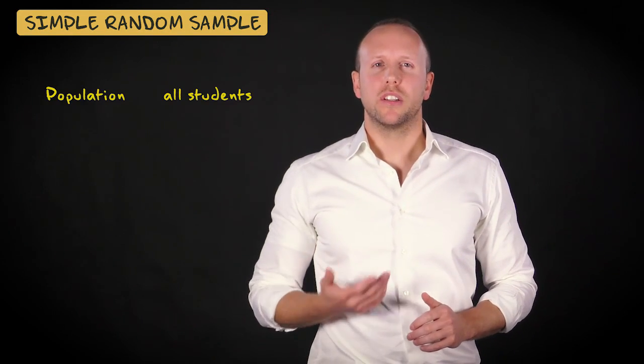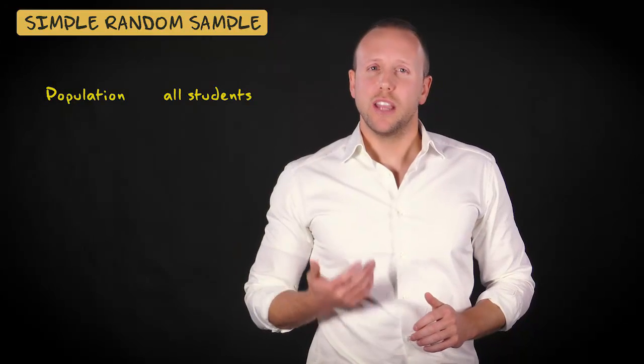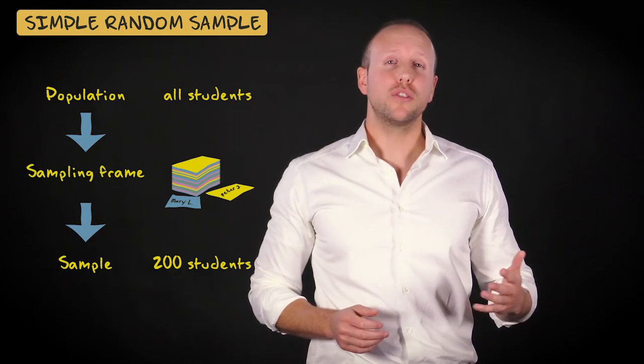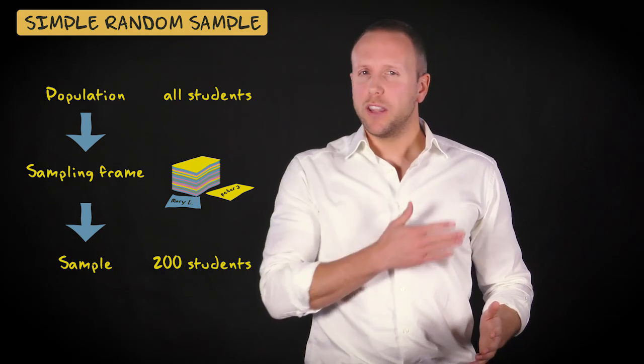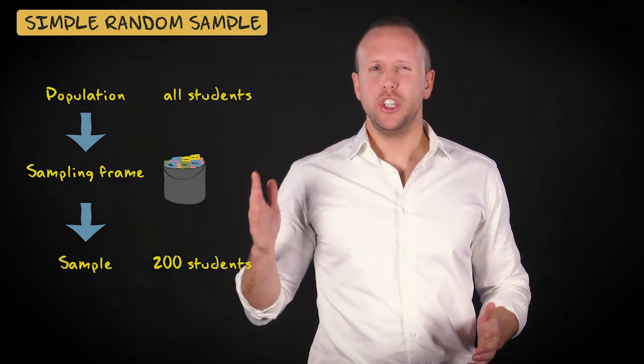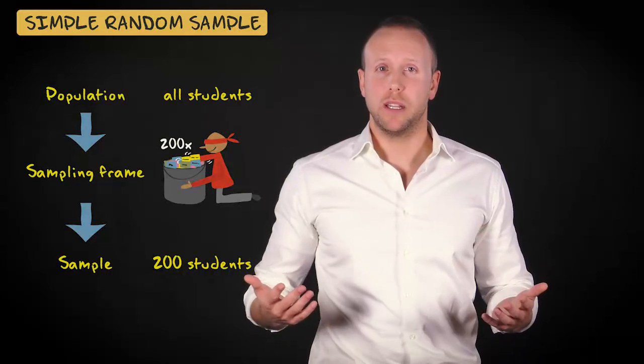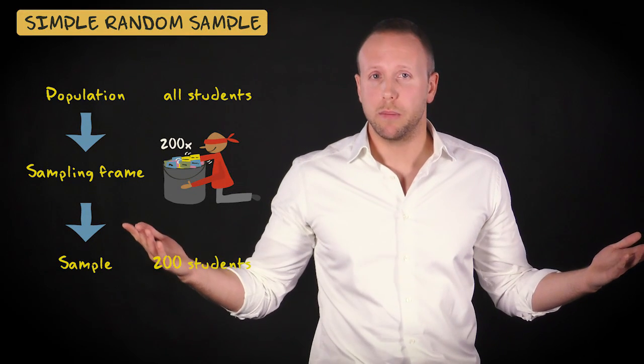Let me first briefly repeat how simple random sampling works. If your population consists of all London students, and you want to draw a sample of 200 students, you write the names of all students on a piece of paper. And you throw all these pieces of paper in a huge bin. Then you randomly select 200 pieces of paper from this bin. That's simple random sampling.